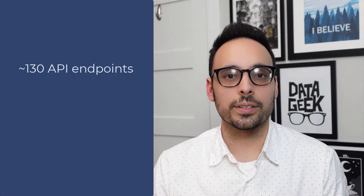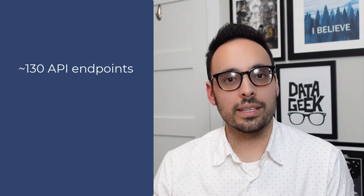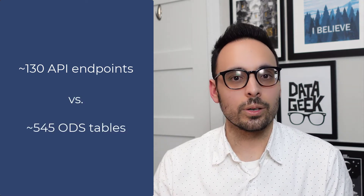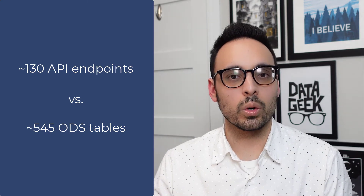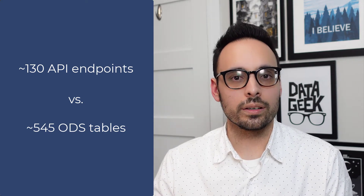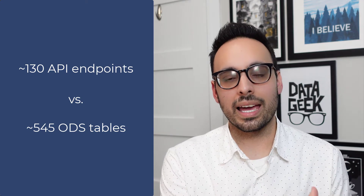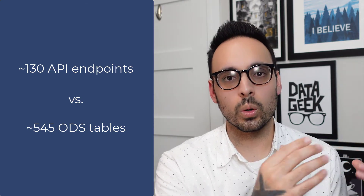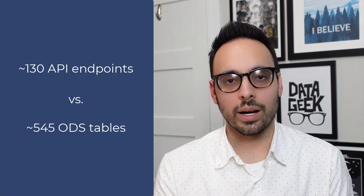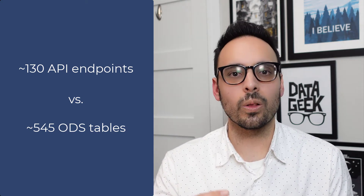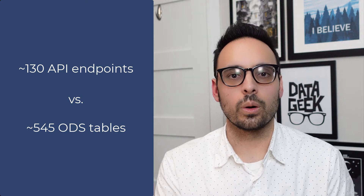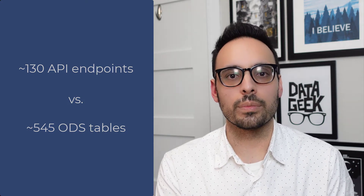The first reason is because when you look at the API surface, there are around 130 endpoints, whereas if you look at the underlying ODS, there are over 540 tables. So when you're looking at just querying the data, querying those API endpoints — where data has been pulled from and stored in a cloud data warehouse — versus querying the ODS tables, we're just dealing with a whole lot less tables if you are looking at the data retrieved from the API.